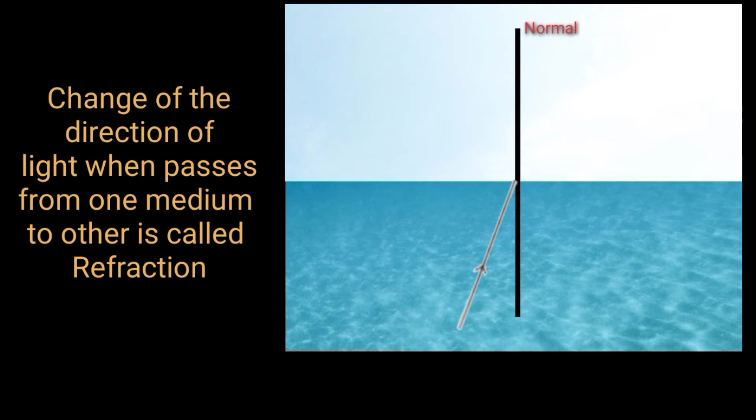What happens if the angle of incidence increases when light is traveling from denser to rarer medium? Here, the light ray bends much away from normal. If we increase the angle of incidence again and again, what happens?